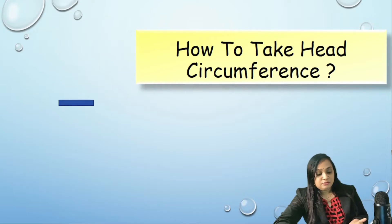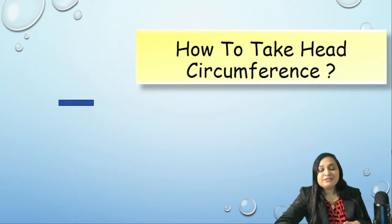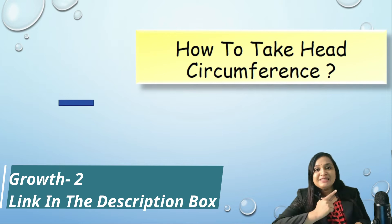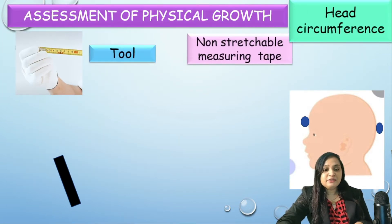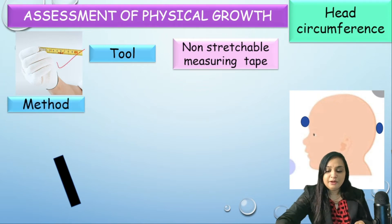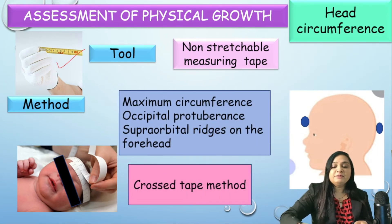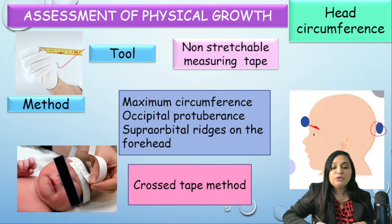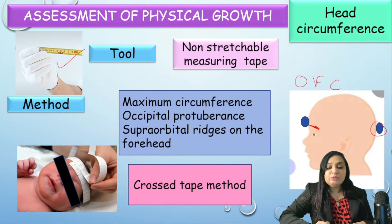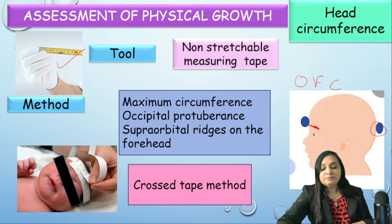First question: how to take head circumference? This was already discussed in a previous lecture on anthropometry — the link is in the description box. Head circumference is taken between the maximum part of the occipital protuberance to the supra-orbital ridges on the forehead. It is also called occipital frontal circumference, or OFC. It is taken with the cross-step method, where the tape has a crossing over it and we measure the number on the tape.